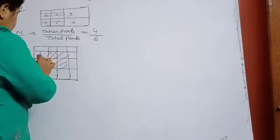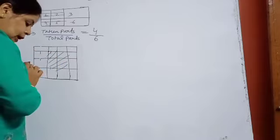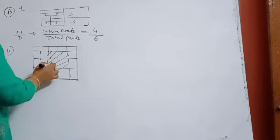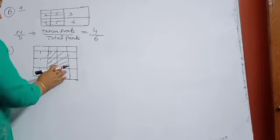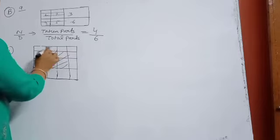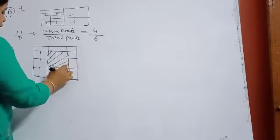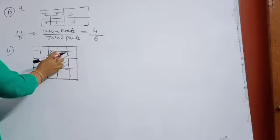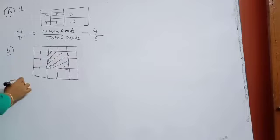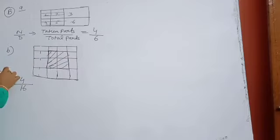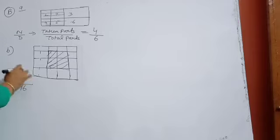In another figure, if you see 1, 2, 3, 4 rows and 1, 2, 3, 4 columns, it is divided into 16 parts. How many parts are coloured? Only 4 parts. So coloured part is 4 upon total parts 16, giving the fraction value 4 upon 16.